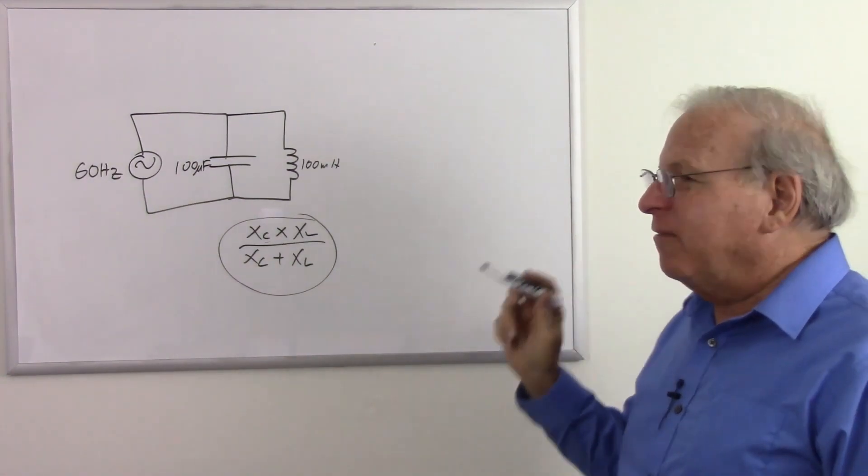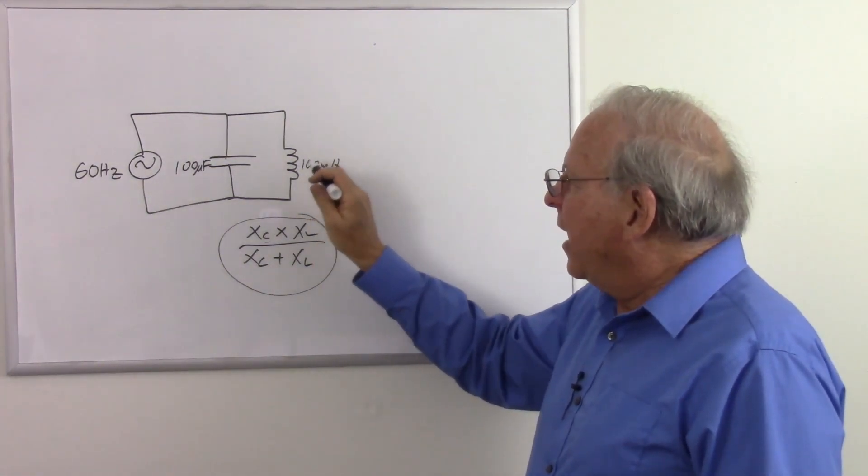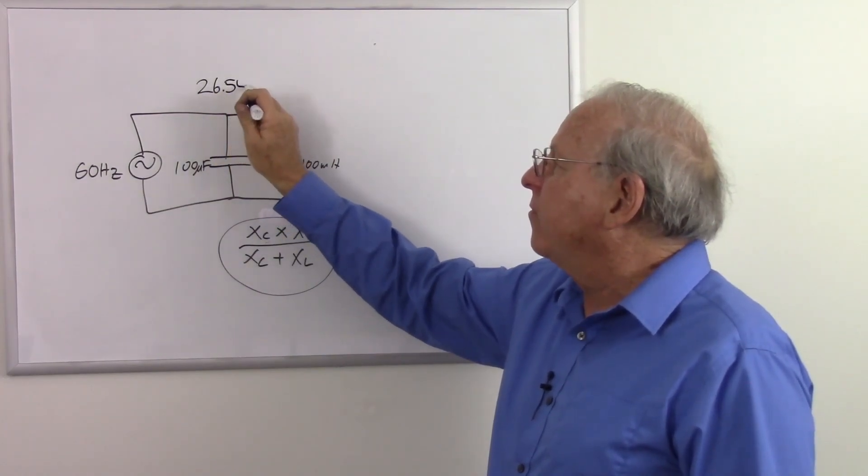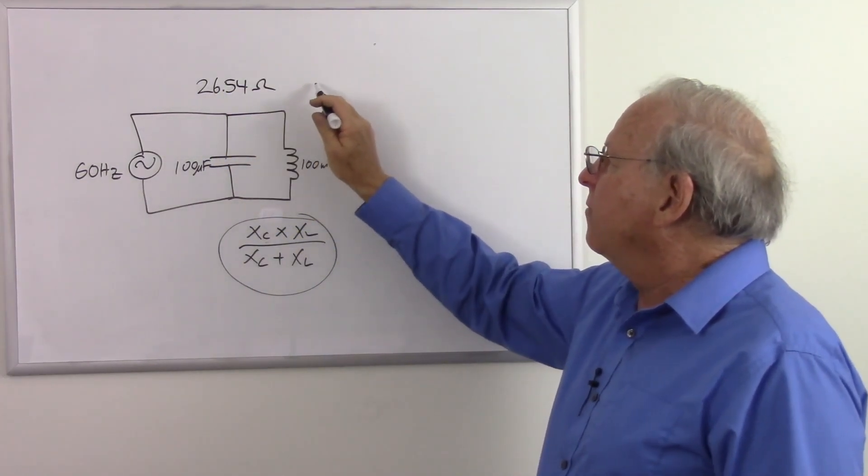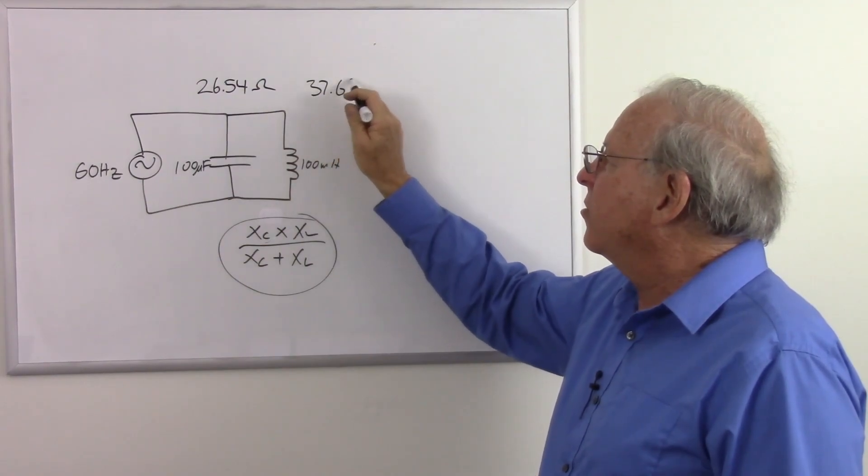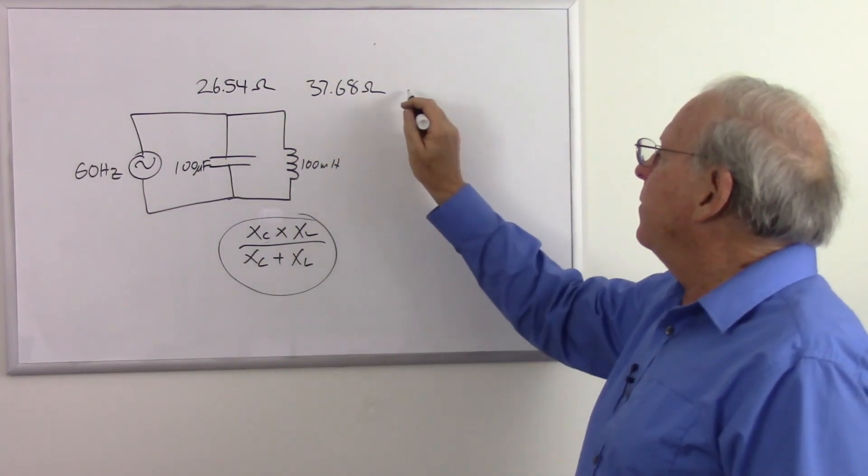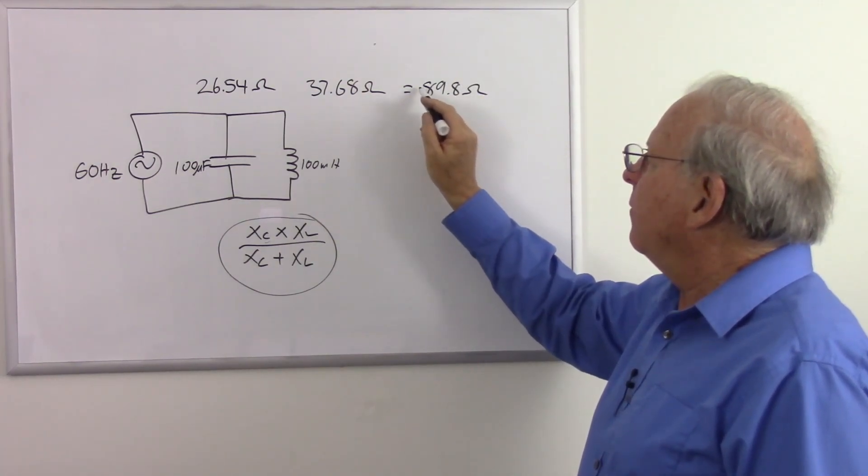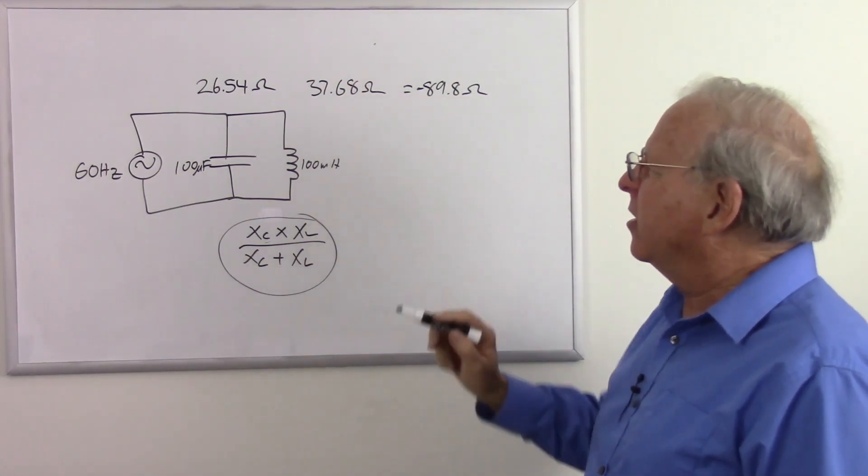But if you watched that video and saw that when we had a capacitive reactance of 26.54 ohms and an inductive reactance of 37.68 ohms, I ended up with a total impedance of 89.8 ohms, and that was negative because it was mostly capacitance.